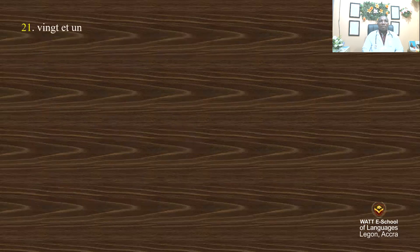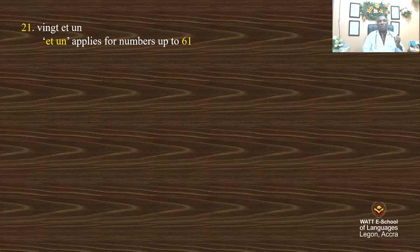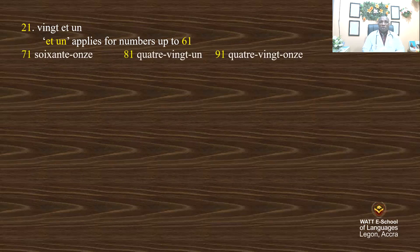All right. I said we have '21', not '21'. The 'et' applies for numbers up to 61. So you have 21, 31, 41, 51, 61. So you don't have — the 71 will not be '61'. We say '71'. For 81, you don't say '81'. For 91, you don't say '91'.